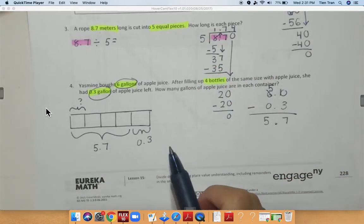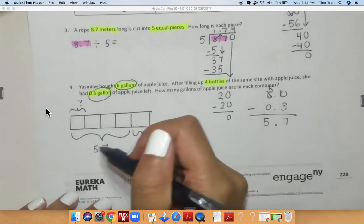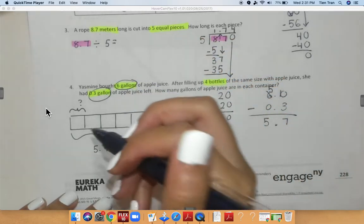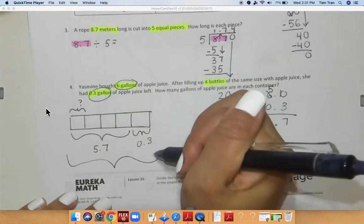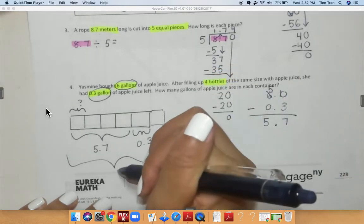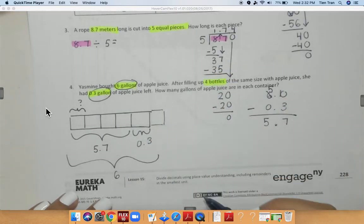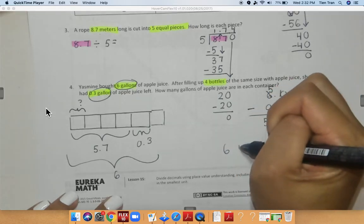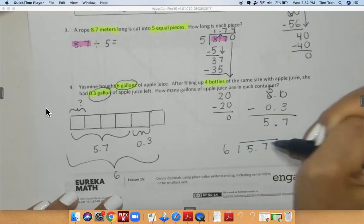So now what I'm going to do is I know that there are six pieces in all. 1, 2, 3, 4, 5. I forgot the sixth one. But there are six pieces in all. And I'm going to divide that by 5.7.